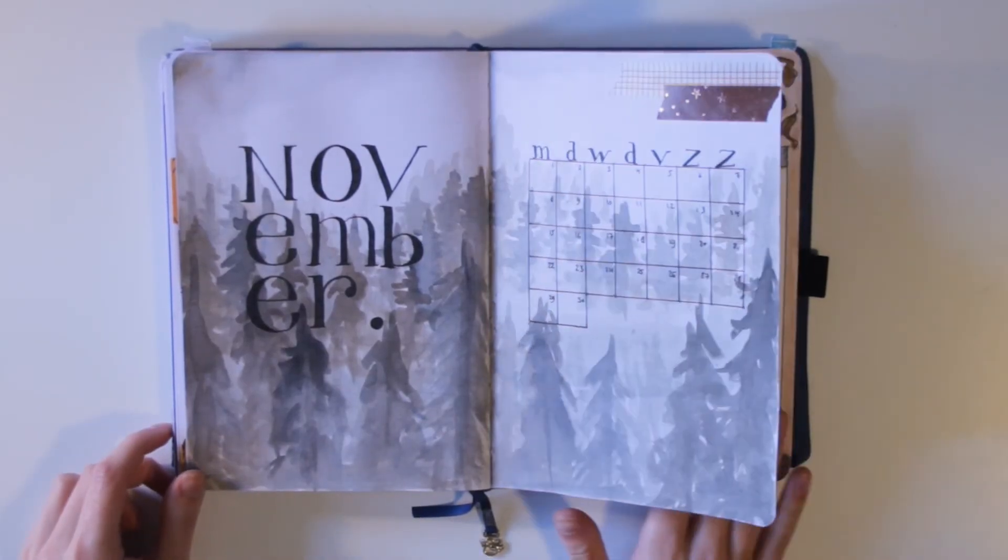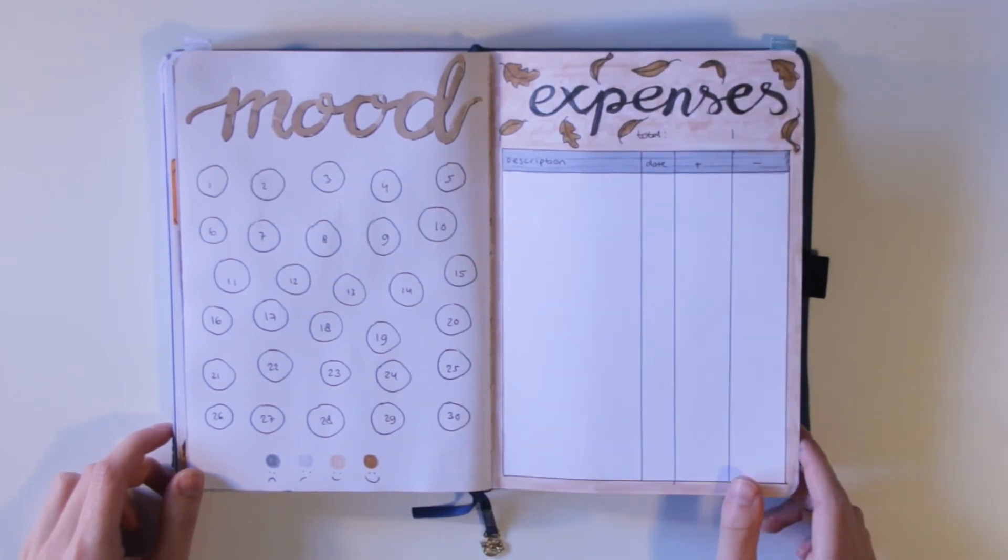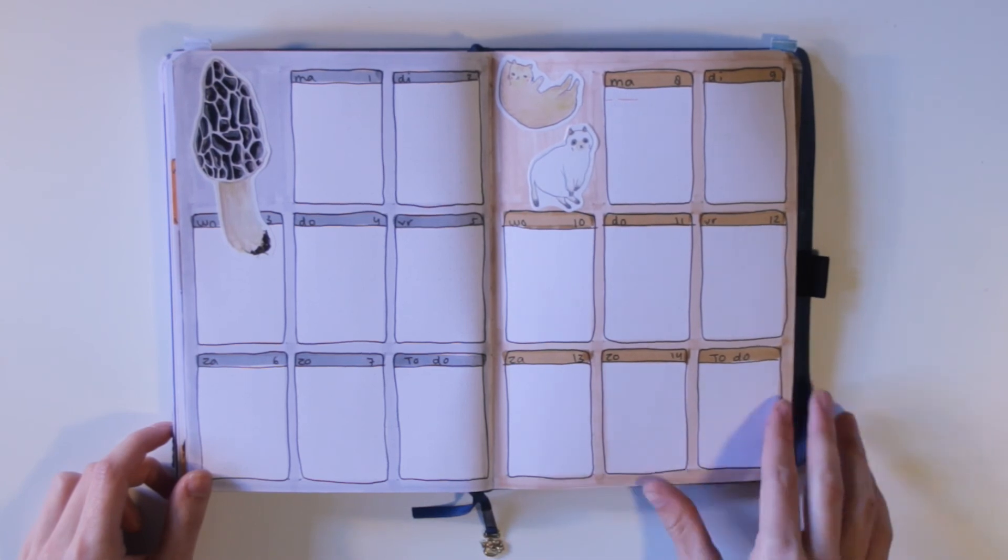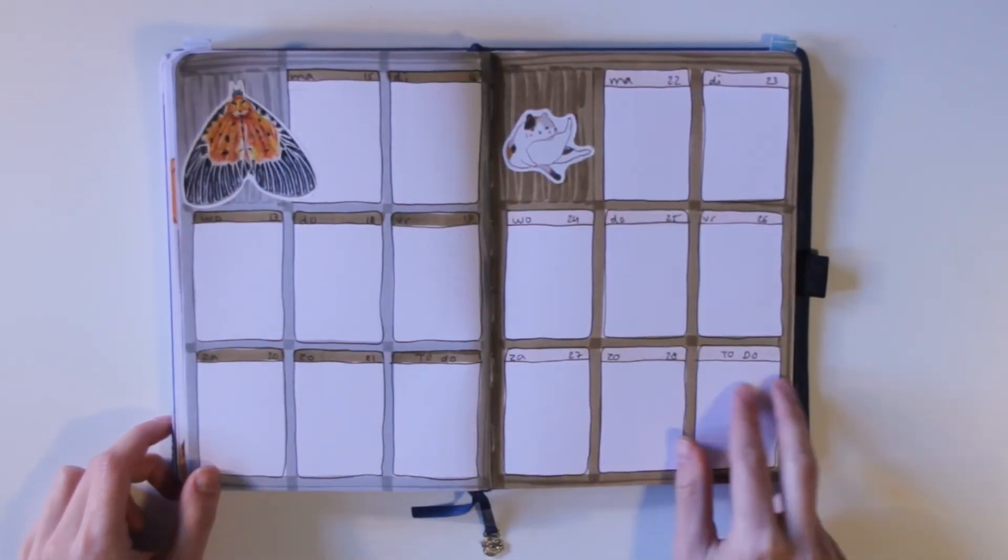Anyway here is my final flip through of my November setup. And I really really love the cover page. I think the weeklies look really nice as well but I'm not such a big fan of the expense tracker. The mood tracker is fine.